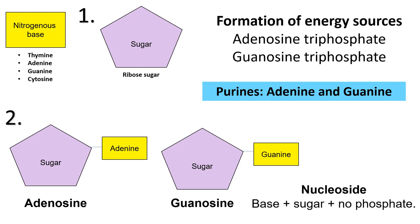Purines are adenine and guanine. Pyrimidines are thymine and cytosine. The sugar molecule is a type of pentose sugar — it's called pentose because it's five-sided. This type of five-carbon sugar is known as ribose. There are various types of phosphorylated nucleotides.